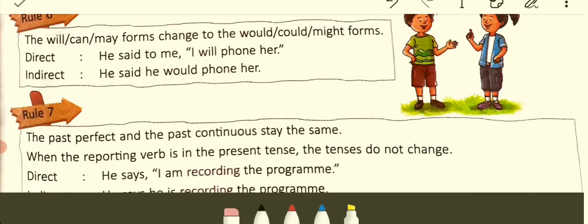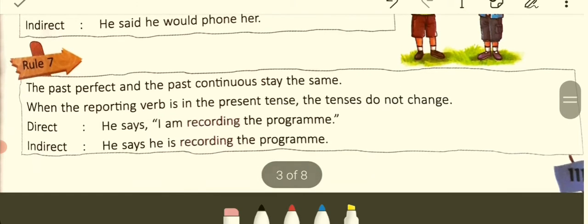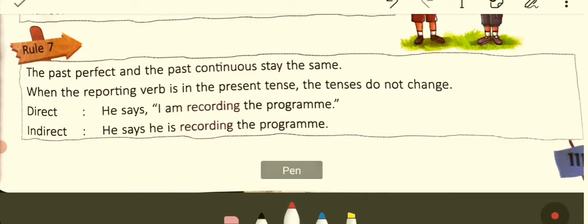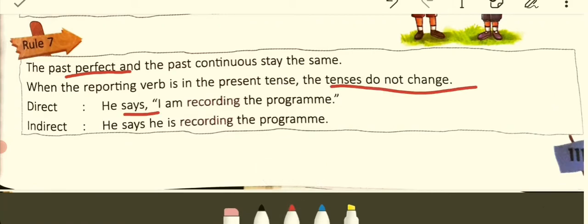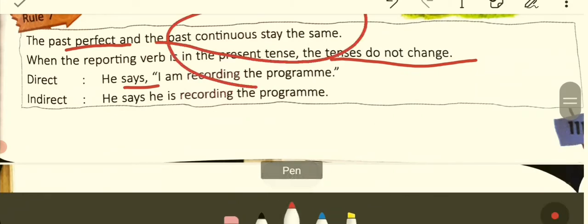Now let's look at the last rule. Rule seven covers the past perfect and past continuous. When the reporting verb is in present tense like 'says,' the tenses do not change. Example: He says, 'I am recording the program.' Indirect: He says he is recording the program — it remains the same, irrespective of the tense change.